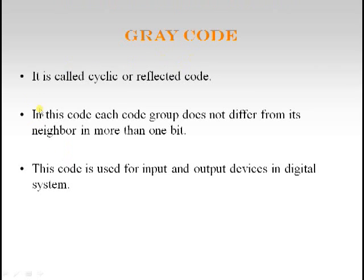Now let us see Gray code, also called cyclic or reflected code. In this code, each code group differs from its neighbor in no more than 1 bit — that is why they are called unit distance codes, where only a single bit differs between neighboring groups. This code is used for input and output devices in digital systems.